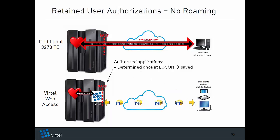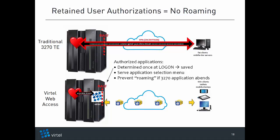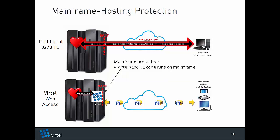When it comes to user authentication and authorizations, Virtel doesn't stop with one-time logon authentication. Instead, Virtel serves the authenticated user an application selection menu that contains only those applications the user is authorized for. If the transaction server — for example CICS or IMS — abends, users are brought back to the Virtel application selection menu, which reflects the authorizations determined at logon. Virtel Web Access users are never allowed to roam free as with traditional 3270 terminal emulators.